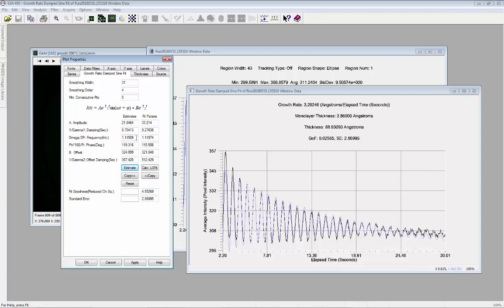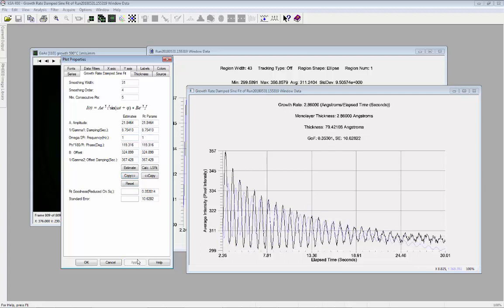Note that the estimates of the parameters can be edited directly in the dialog boxes. The resulting fit can be recalculated and applied to see the new fitted curve. One can also directly copy the estimates to the fit params dialog boxes to see the resulting curve. This allows the user to directly see the effect of changing the fit parameters. The reset button can be used to reset the parameter estimates as well as the smoothing parameters.